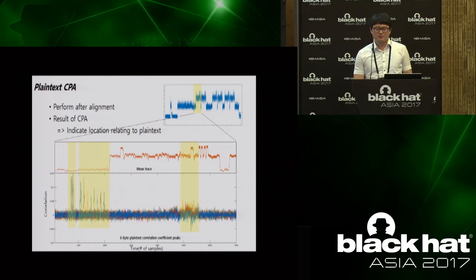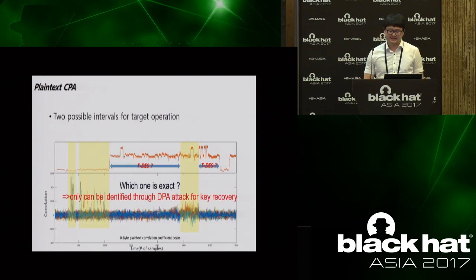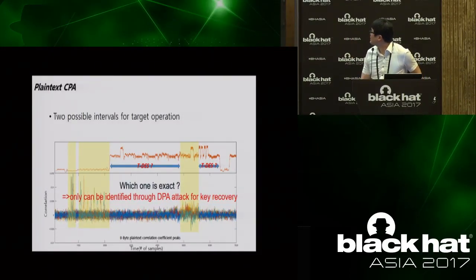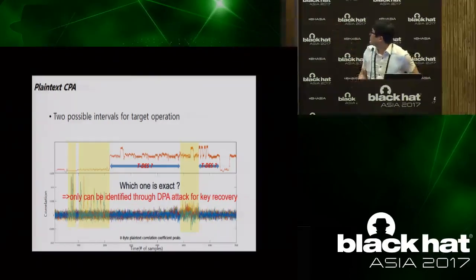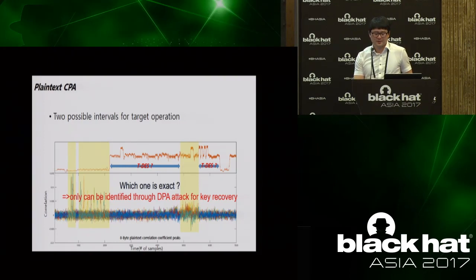Combining this information, we can narrow down the location of the target operation. Triple-DES might operate here or here. We perform DPA with the proper range. Which one is the exact location can only be identified through the result of the DPA attack. As a result of the attack, it turned out that triple-DES operated on the right side. Interestingly, it was composed of four single-DES, not three single-DES. We deduce that this is assigned as a fault countermeasure which can monitor for fault injection during the triple-DES operation.